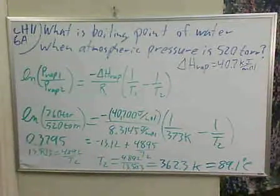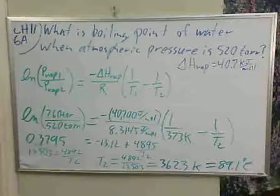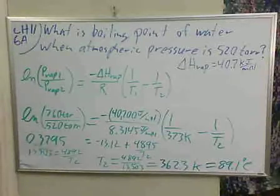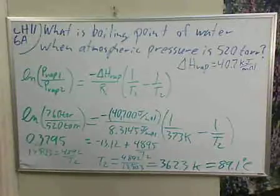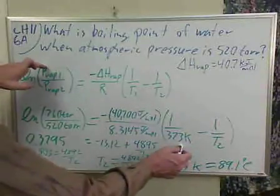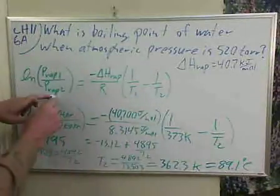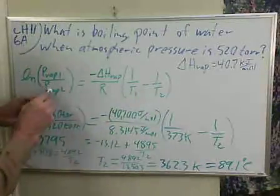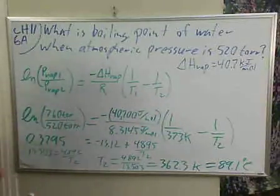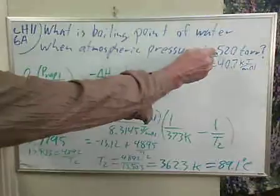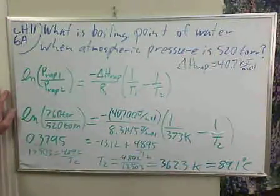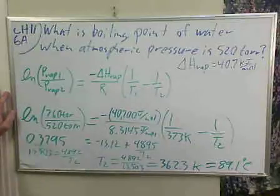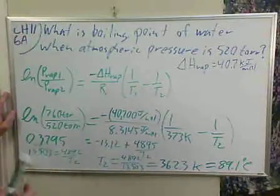So, using the exponential relationship of our vapor pressure with temperature, using a two-point version of that equation, we can use our normal boiling point as one of our reference points and calculate the temperature boiling point associated with any other vapor pressure that we want. So when the vapor pressure is 520 torr, the boiling point of water is going to be 89.1 degrees Celsius. A lower pressure equating with a lower temperature.